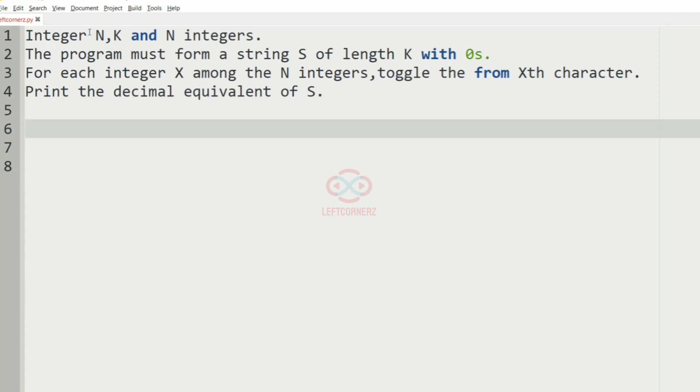First we'll understand our question. The program must accept the integer n, k and the n integers as the input and the program must form a string S of length k with zeros.